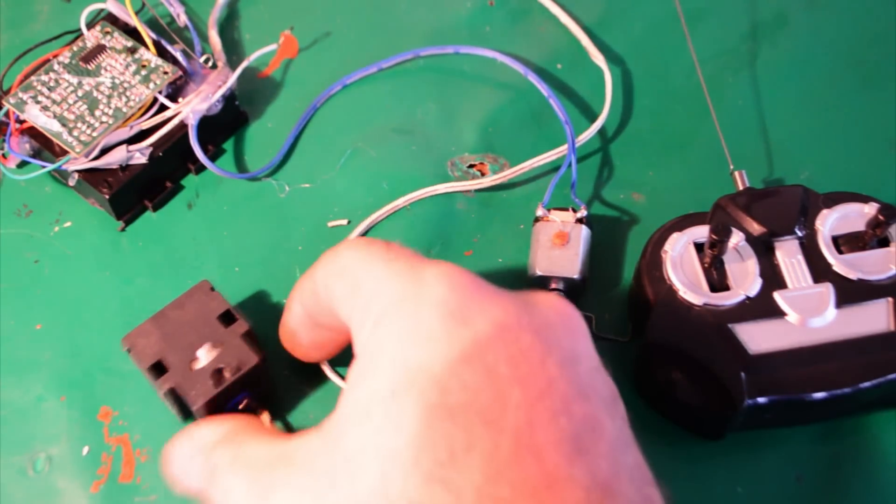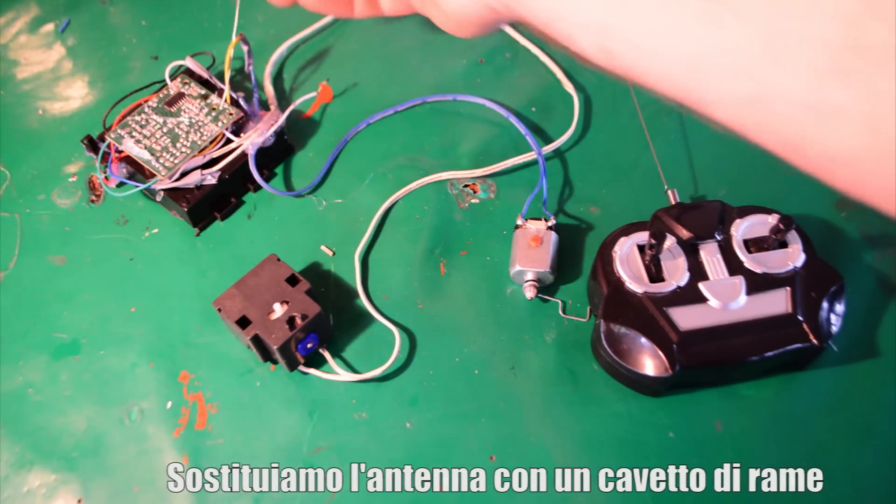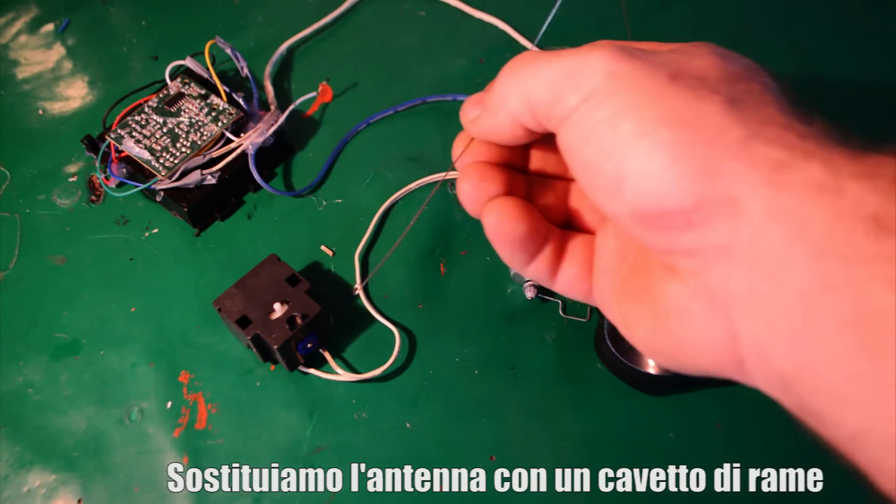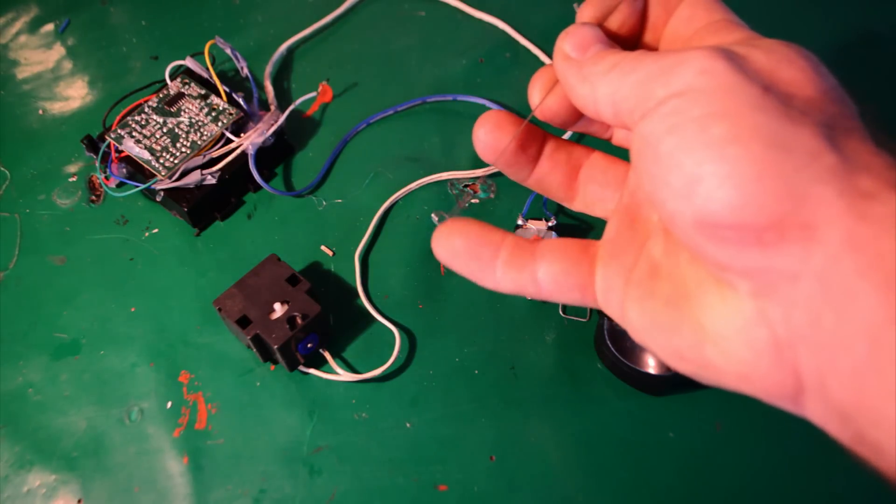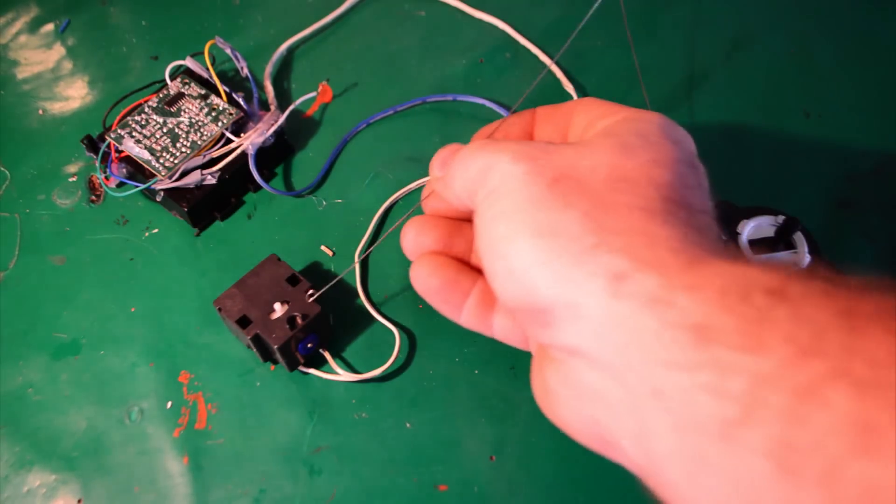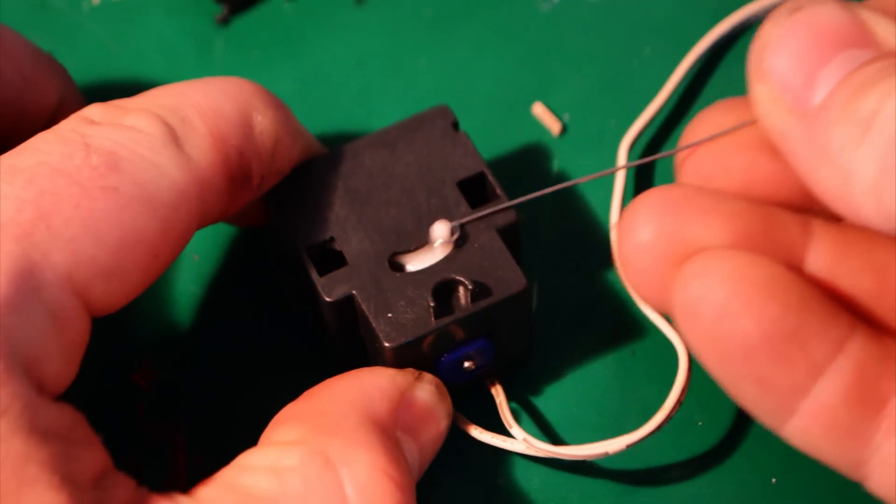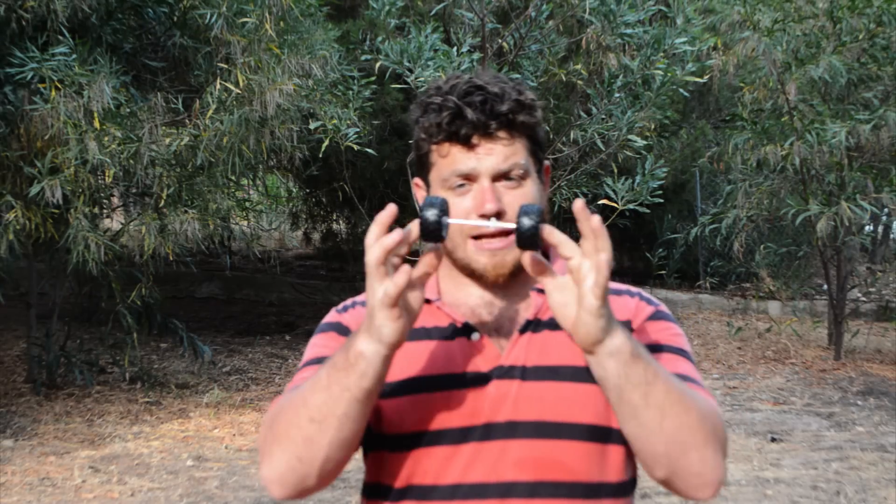First of all we need to take the antenna of the car. The antenna is made with a very nice iron material. On the back side of this antenna we have a small ring. This small ring goes on the top of the plastic part of the steering car like this.